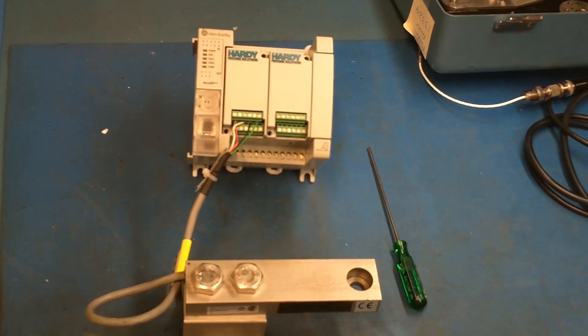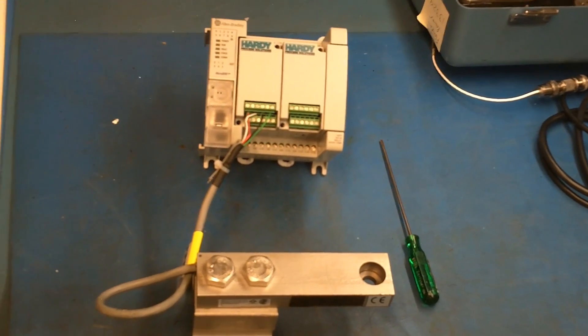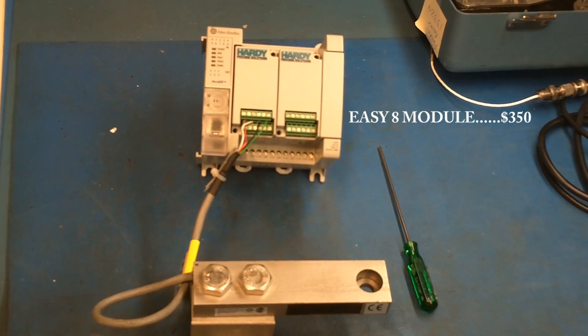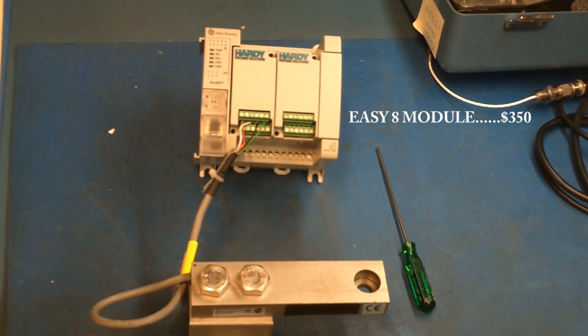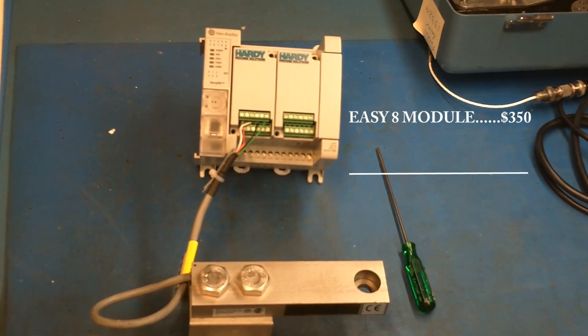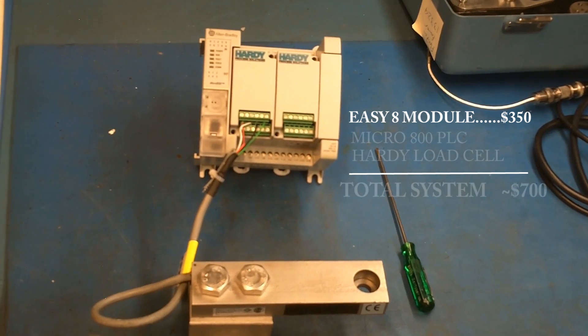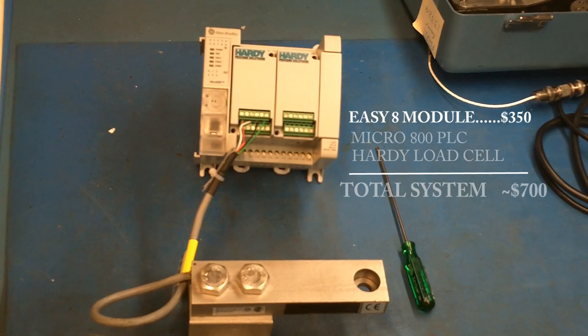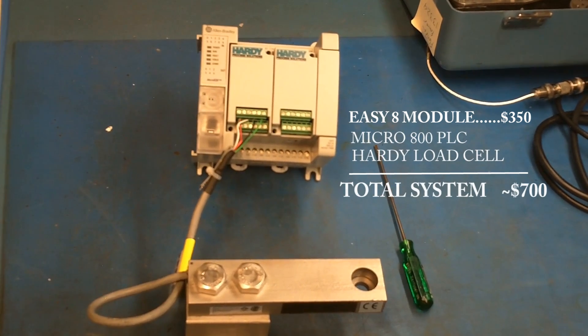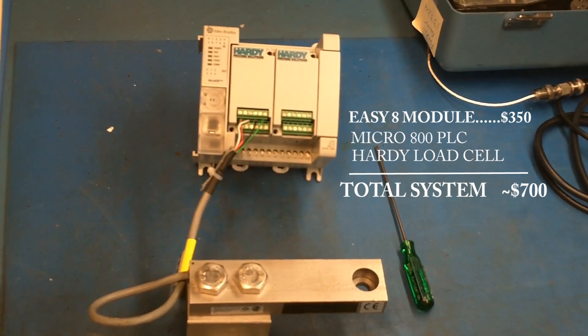The EZ8 module from Hardy Process Solutions is available for less than $350. Combined with a micro-800 PLC from Rockwell and a Hardy Advantage single-point load cell, the entire PLC system with accurate, stable weight can be had for less than $700. That's $1.90 a day, less than a cup of coffee and a bagel.